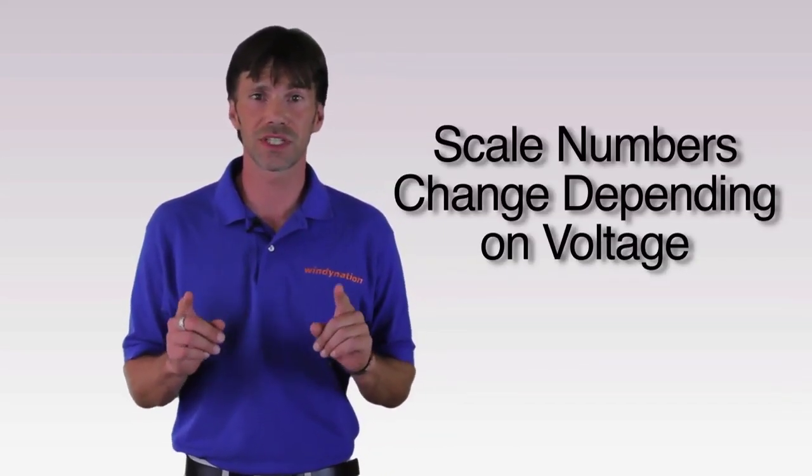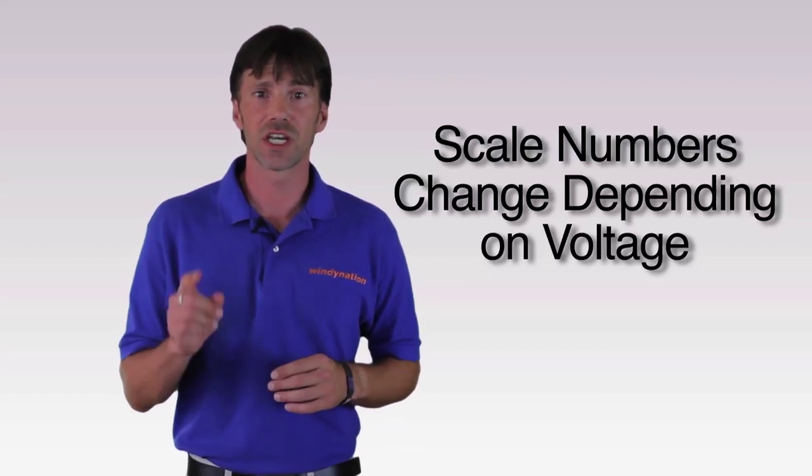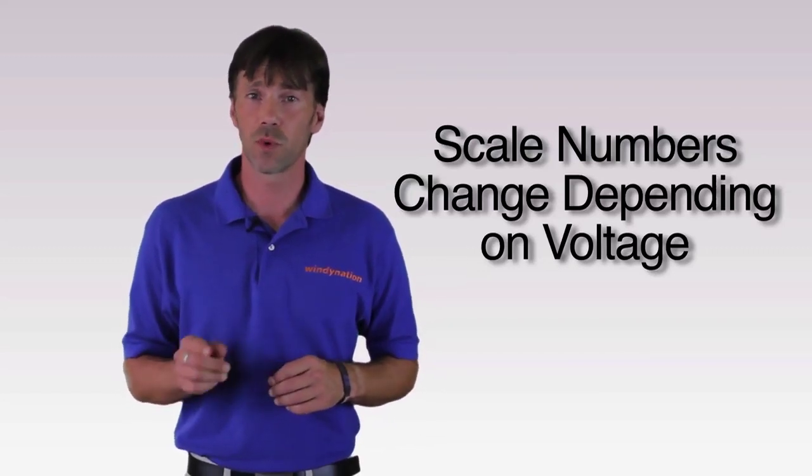Finally, we need to set our bulk and float charge parameters. Please see the charts in your manual as the scale numbers printed on the C60 circuit board change depending on what voltage you're set for, 12 or 24.